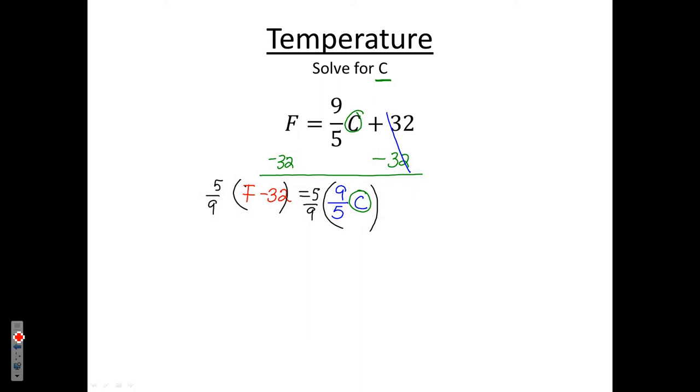And I want to start with the right-hand side first. Why that's so important to multiply by the reciprocal. Notice, I have a 5 in the top, a 5 in the bottom, they cancel. Notice, I have a 9 in the top, a 9 in the bottom, they cancel. And right off the bat, you can see that you're simply left with C. So, an option is to multiply by that reciprocal when you're dealing with a fraction.